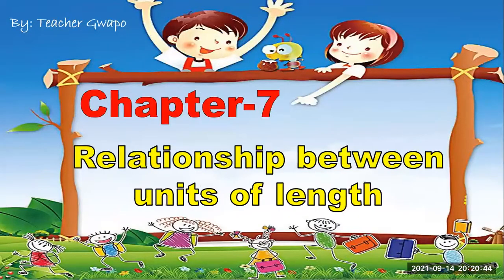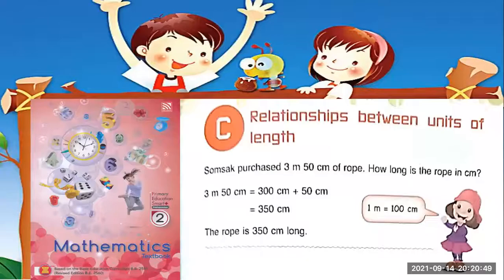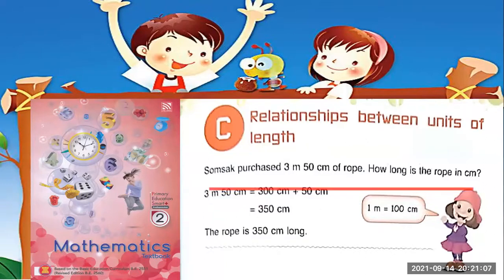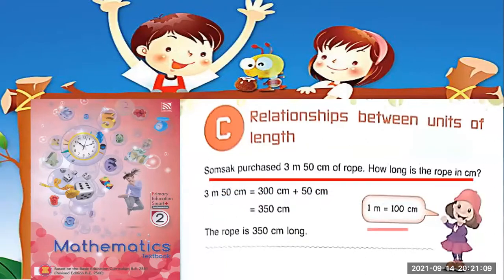In Chapter 7, this time we will learn about the relationship between units of length. Here is an example: Sam purchased 3m and 50cm of rope. How long is the rope in centimeters? Now we will convert 3m and 50cm into centimeters.